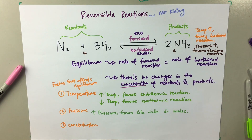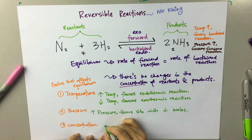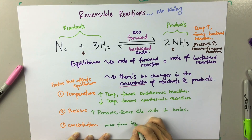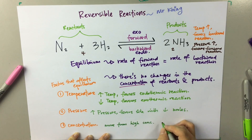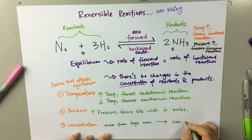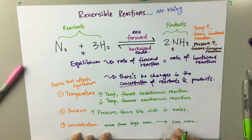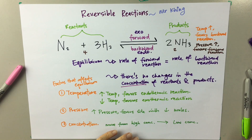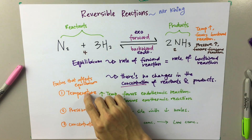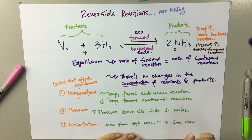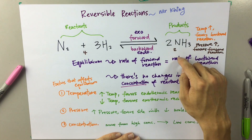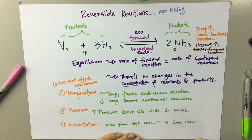As for concentration, it will always move from high concentration to low concentration until equilibrium is achieved. So, basically, these are the three main factors that affect equilibrium, which are very popular in exams.